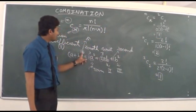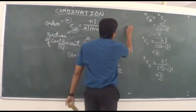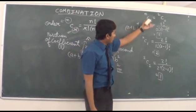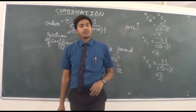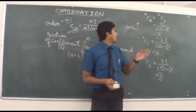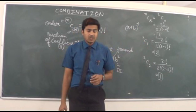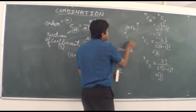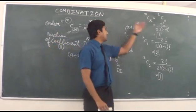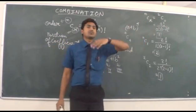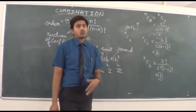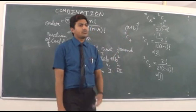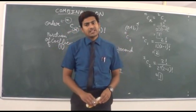If it is (a+b)⁷, n simply increases to 7, and we can calculate whatever coefficient we need — the 0th, 1st, 2nd, 3rd, and so on. For example, to find the 5th coefficient of (a+b)⁷, since we start counting from 0, we calculate ⁷C₄ and that gives us the 5th coefficient. This way we can calculate any coefficient of any natural power of a binomial expansion. Thank you.